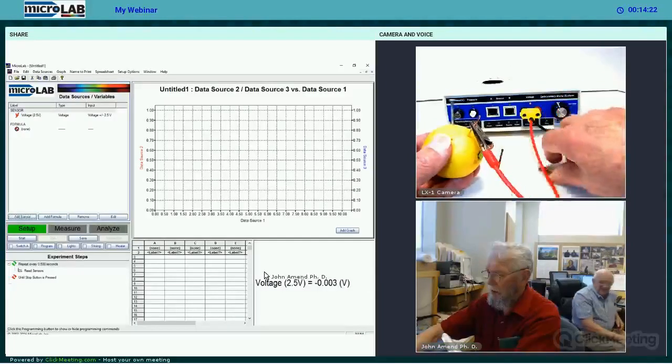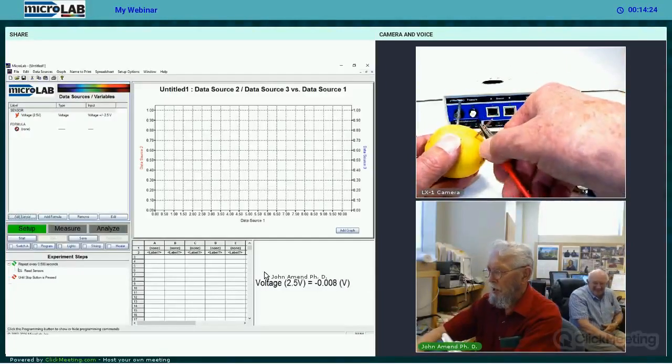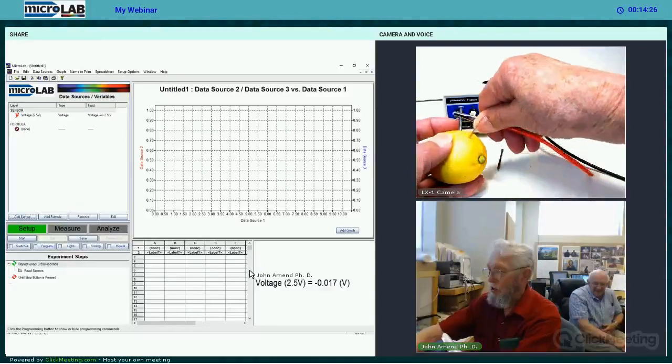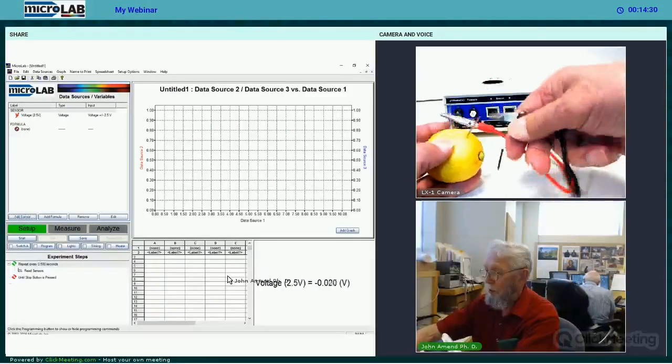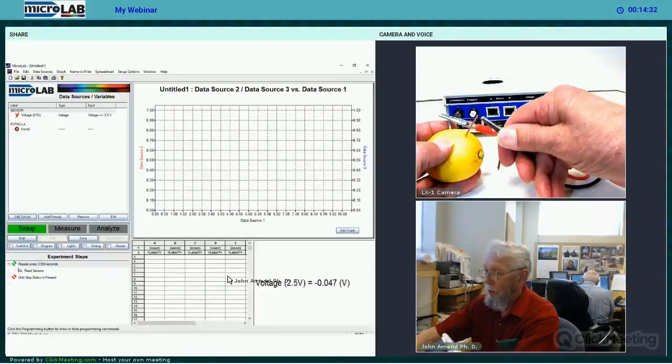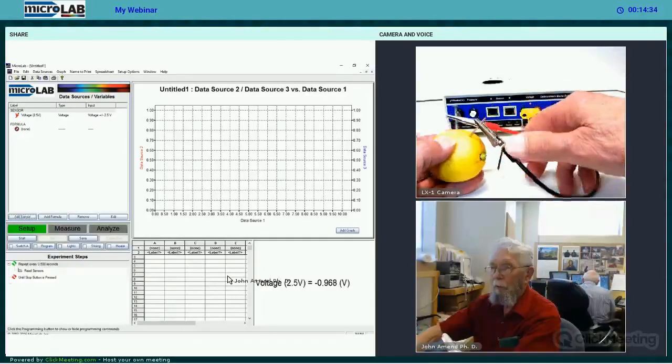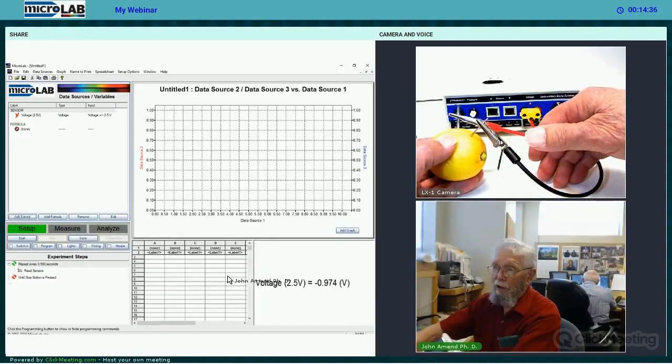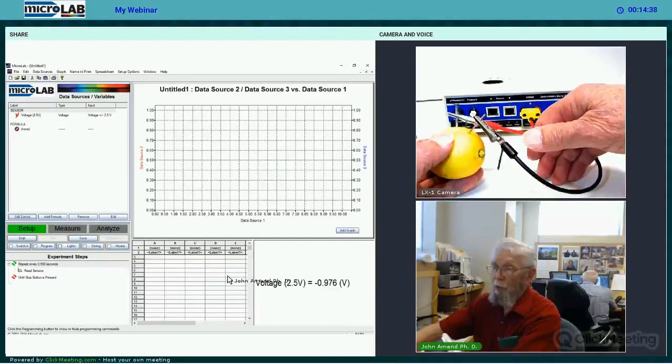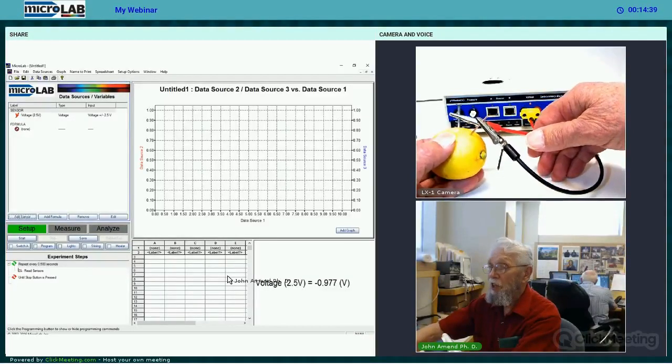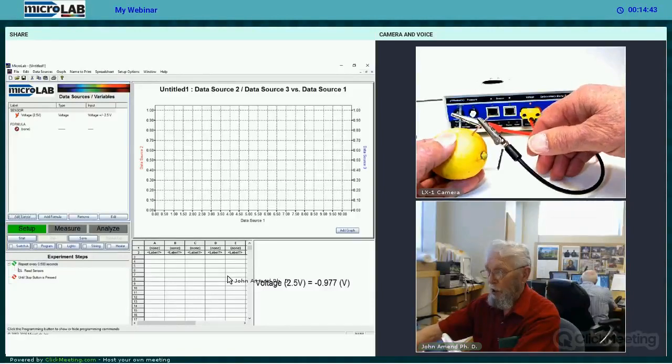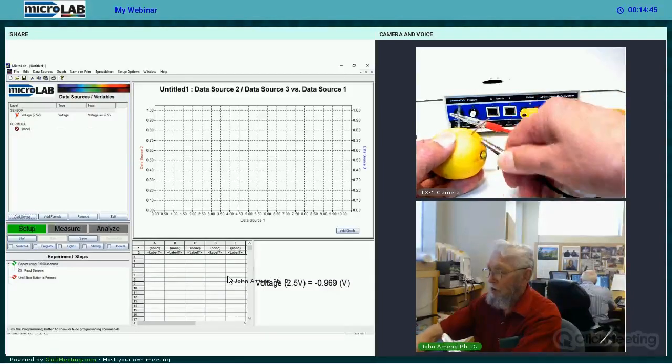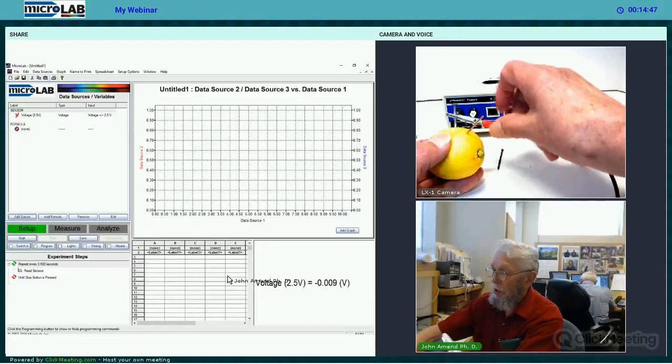As a matter of fact, what if we had connected it in the reverse direction? Let's try it. If we're connected in the reverse direction, we get 0.974 volts, or roughly the same as we had before, with one big exception. If you'll note the negative sign in front of this voltage.